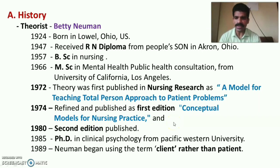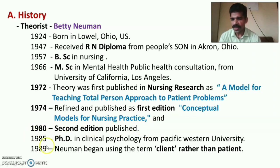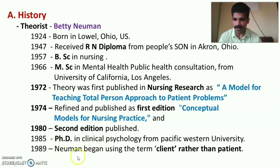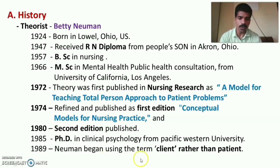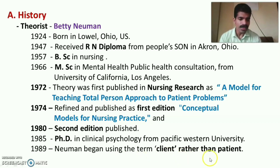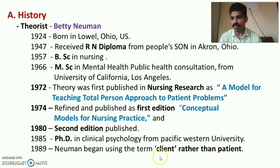The second edition of Neuman's model was published in 1980. In 1985, she earned her doctorate — a PhD in clinical psychology. From 1989 onwards, Neuman began using the term 'client' rather than 'patient,' thus replacing the earlier terminology in her model.